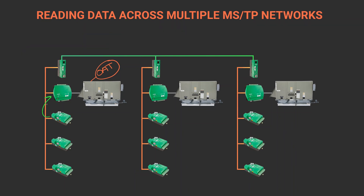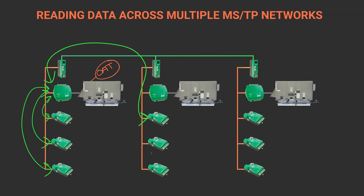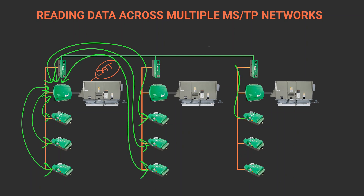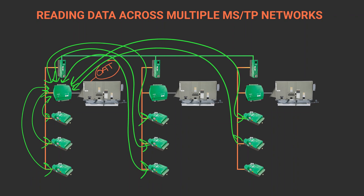Another way would be to have each VAV read the data, but again, we'd have the same amount of network traffic. With either reads or writes, the outside air requests will all travel across multiple networks to get the outside air value to all the controllers in the system, and all the network segments will see all the messages.